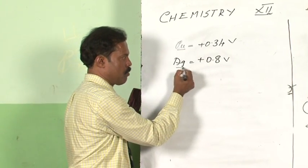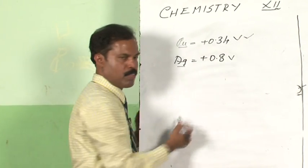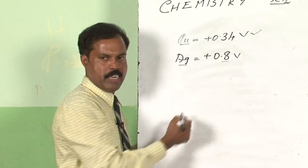We have got two electrodes, one is copper and other is silver. The electrode potential of copper is plus 0.34V and that of silver is plus 0.8V.